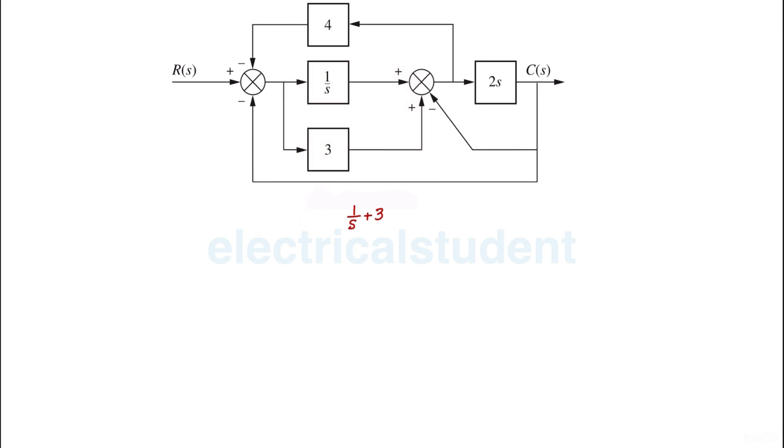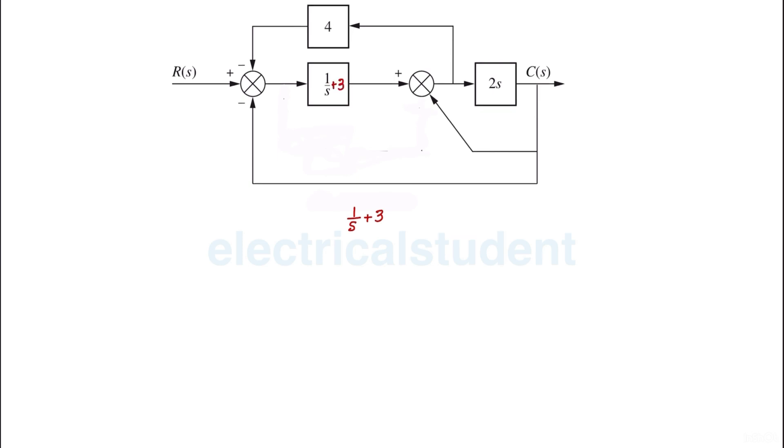Let's remove this block because this is a parallel. So this thing will be equal to 1 plus s, 1 over s plus 3.